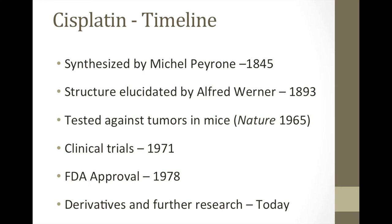It wasn't until it was reported in Nature in 1965 that it was found effective in treating tumors in lab mice. Research in the 1960s concluded with clinical trials beginning in 1971, ultimately with FDA approval in 1978. Today, there is still research being done on further derivatives of cisplatin to help combat issues of side effects.